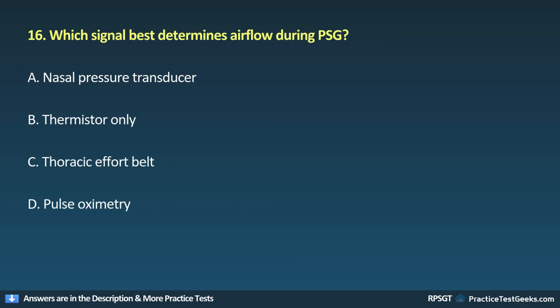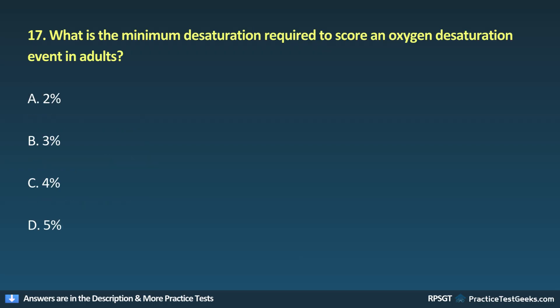Question 16: Which signal best determines airflow during PSG? A. Nasal pressure transducer, B. Thermistor only, C. Thoracic effort belt, D. Pulse oximetry.